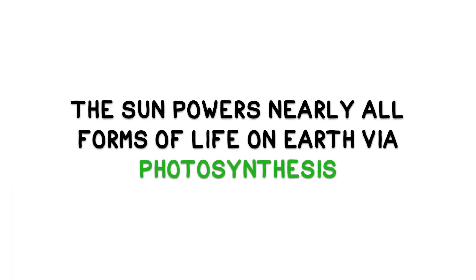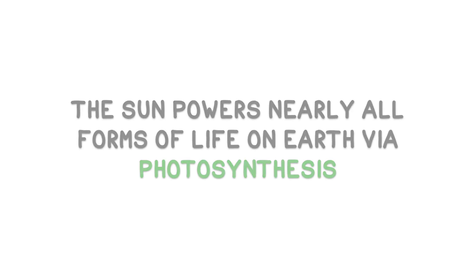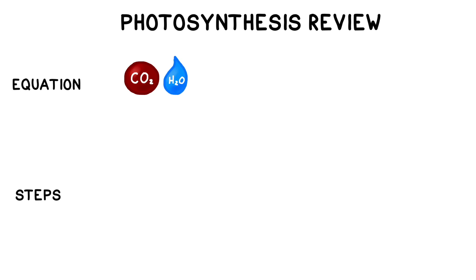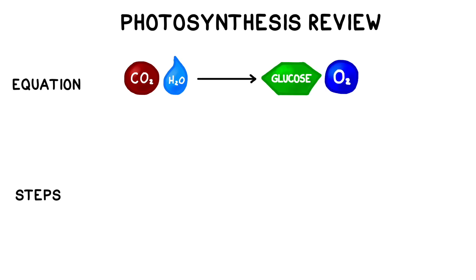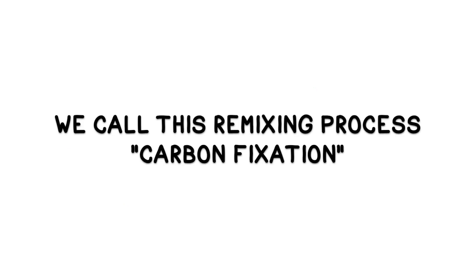The Sun powers nearly all forms of life on Earth, either directly or indirectly via the process of photosynthesis. Energy from the Sun jumpstarts the process of remixing the components of carbon dioxide and water into useful organic compounds like sugars, starches, and other products containing carbon. We call this remixing process carbon fixation.